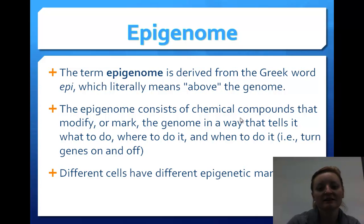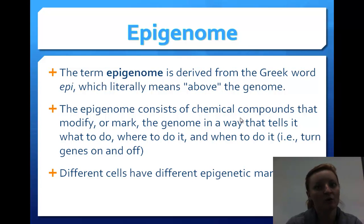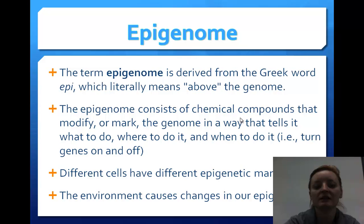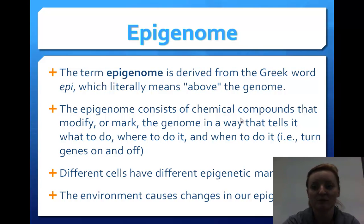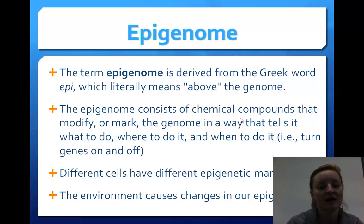Different cells have different epigenetic marks. For example, puberty happens with females earlier in life than boys. The environment causes changes in epigenetics — this refers to how even identical twins, if exposed to different environmental factors, may have different outcomes in life, health, and body based on epigenetics.